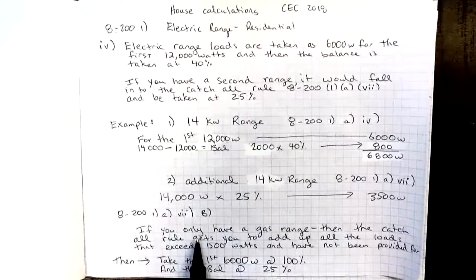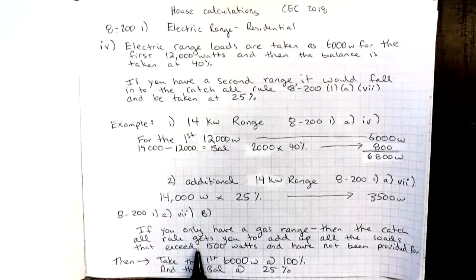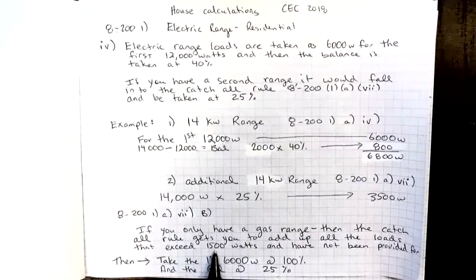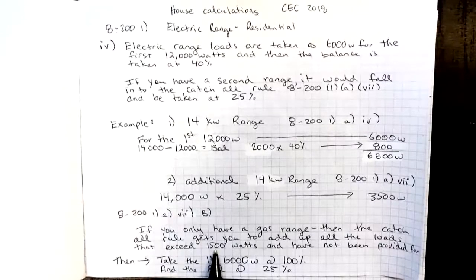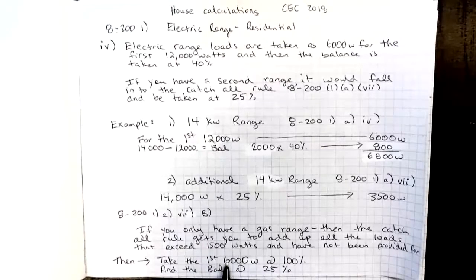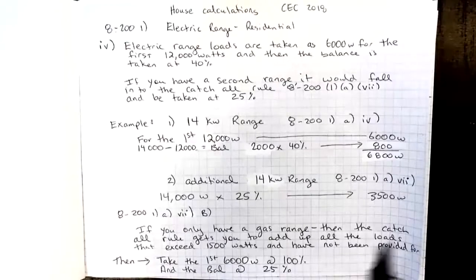If you only had a gas range, then the catch-all rule gets you to add up all the loads that exceed 1,500 watts, and that have not yet been provided for. They will take the first 6,000 watts at 100%, and the balance at 25%. And I'll show you an example of that when we get to the catch-all rule.